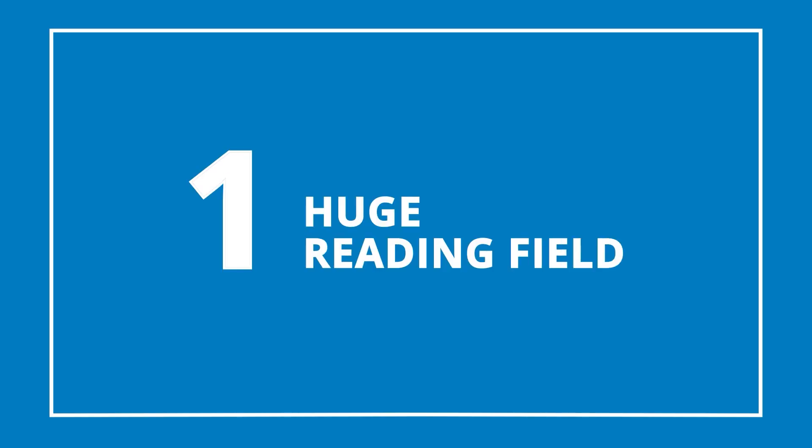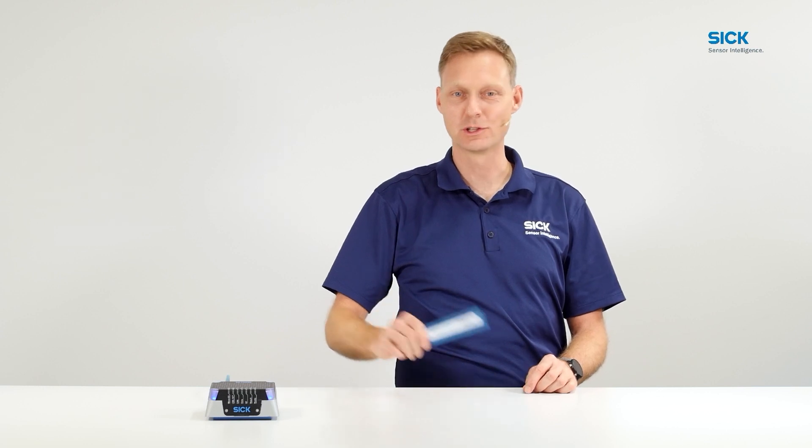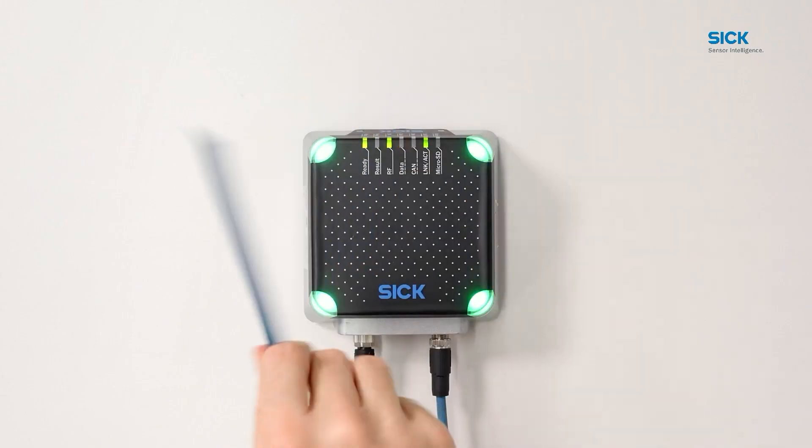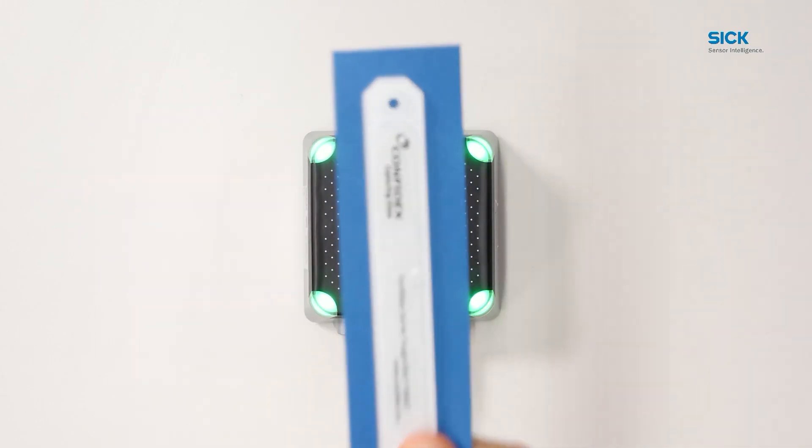First, huge reading field. The greatest advantage of RFID is the huge reading field, which works from zero millimeters to several meters. It's also very tolerance-forgiving. You don't need to be in an exact laser line or worry about depth of field.